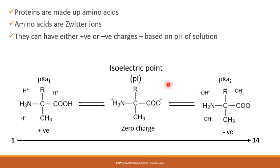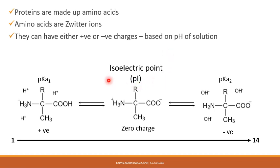Before going ahead, we need to know how this technique is regulated. So you need to know what proteins are. Proteins are basically made of amino acids, and these amino acids are known as zwitterions. A zwitterion is a term used for any ion or molecule that tends to have either a positive or negative charge depending on the pH of the solution it is kept in.